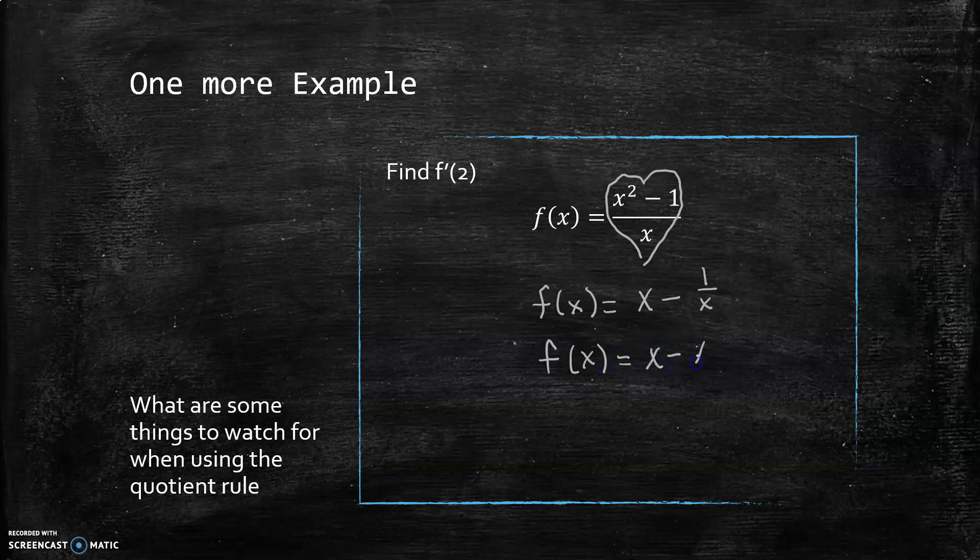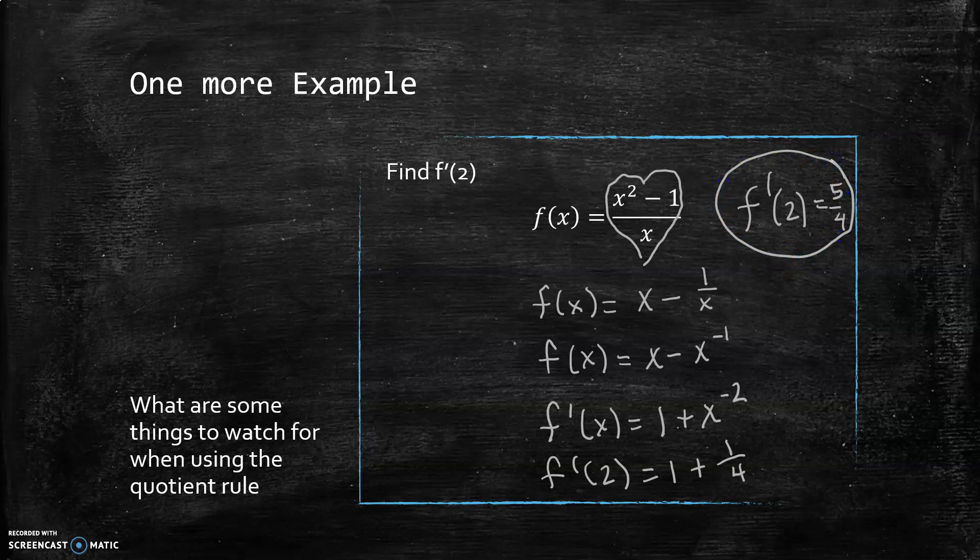If I'm going to take the derivative and evaluate it at 2, it's really fast and easy to do it this way rather than deal with the quotient rule. I'm even doing it as I talk. The derivative of x would be 1, the derivative of x⁻¹ would be bring down the negative 1, subtract 1, and now I can plug in 2. So f'(2) would be 1 + 1/4, or 5/4. So be smart about stuff—don't try to do the quotient rule if you don't have to. Good luck tonight.